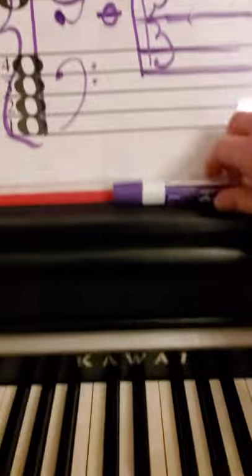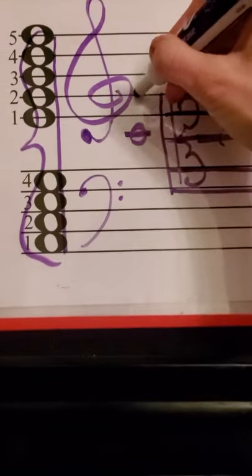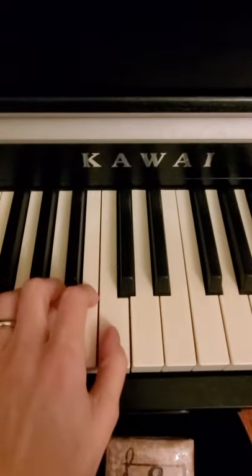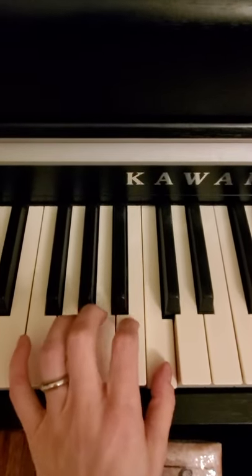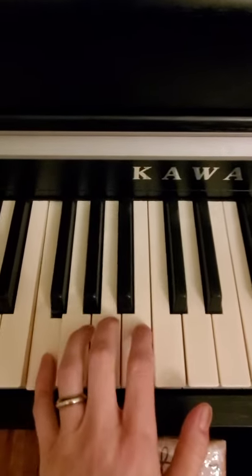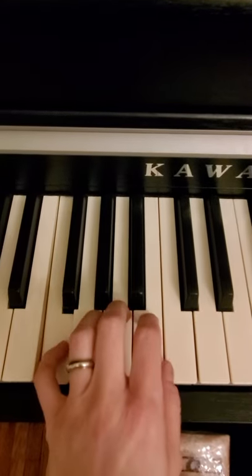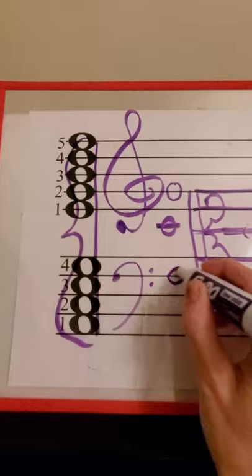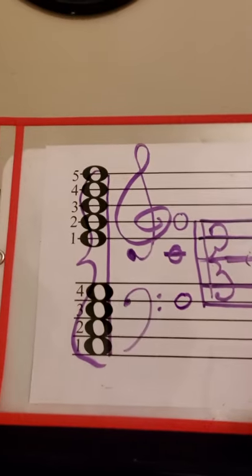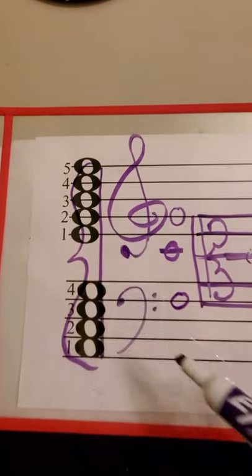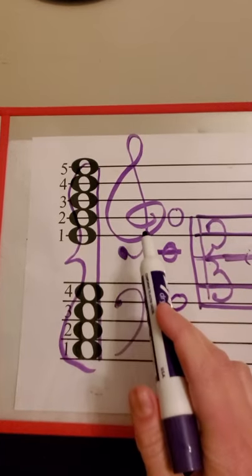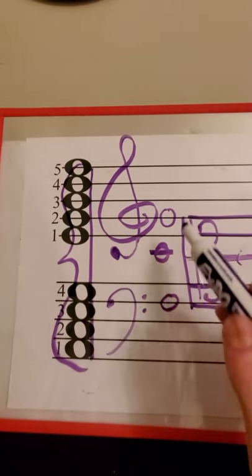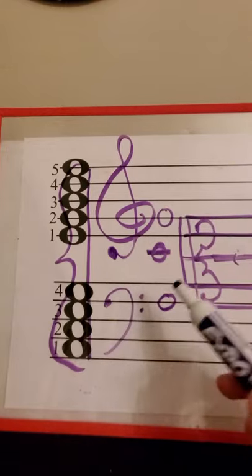If I were to put my thumb on middle C, and put one finger all the way up to my pinky, where I run out of fingers, that is my treble G, which is the line of my clef. If I do the opposite with my left hand, I put my thumb on middle C, and I walk my fingers down until I run out. That is my bass F. So we have bass clef and treble clef, F clef and G clef. So those are our first three anchor notes.